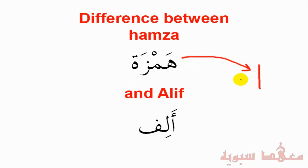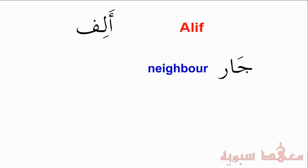So let's talk about this in a bit more detail. First of all, we'll talk about the Alif. So for example, the word 'Jaar.' Jaar means neighbor. A few things to notice here is that we have the Alif. The Alif comes as a long vowel. So if you remember in the lesson on the long vowels, when we have a Fathah followed by an Alif, it's an 'A' sound. So we say Jaar.